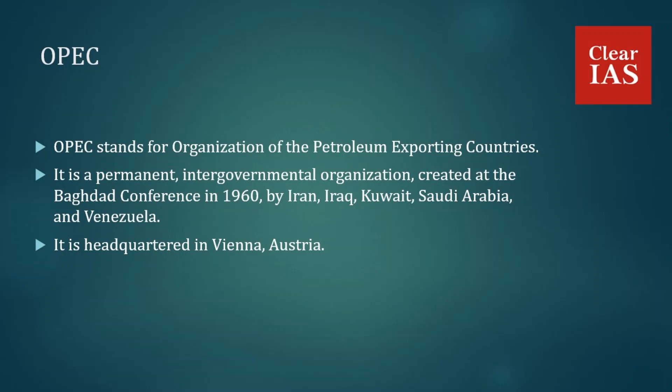OPEC is headquartered in Vienna, Austria. Membership is open to any country that is a substantial exporter of oil and which shares the ideals of the organization. Today, OPEC is a cartel that includes 14 nations, predominantly from the Middle East, whose sole responsibility is to control prices and moderate the supply of oil.